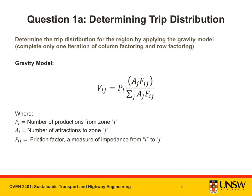Let's now take a closer look at part A. We are asked to determine the trip distribution using the gravity model. The gravity model describes the macroscopic relationships between places and has been inspired from Newton's law of universal gravitation. It assumes that the desire to travel between two places increases if there is productive activity at either location, but declines with increasing distance, time, and cost between them. In the formula, Pi is the number of productions from zone I, Aj is the number of attractions to zone J, and Fij is a friction factor that measures impedance from zone I to zone J.